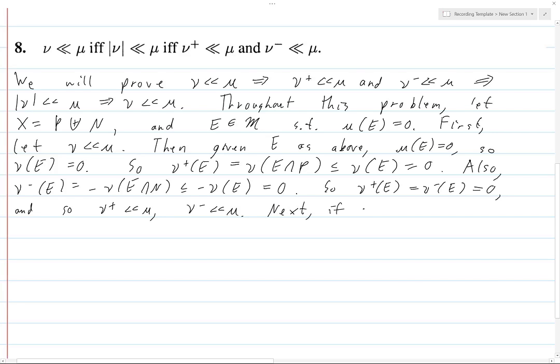Next, if ν⁺ is absolutely continuous with respect to ν, and ν⁻ is, so now we are doing this implication. Then ν⁺ E is equal to ν⁻ E is equal to zero. Here, I literally just erase the statement, like, let E be a set such that μ of E is equal to zero, because we're using it so many times. I'm just gonna skip it and just say, then we got this.